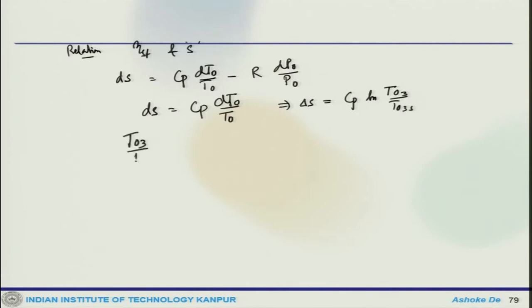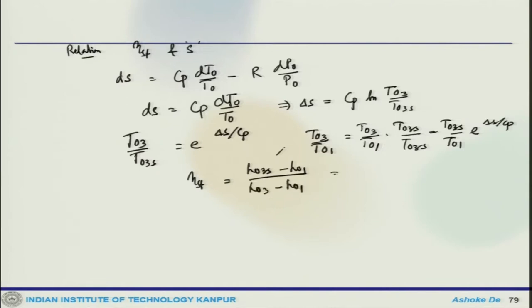Which means delta S = Cp ln(T03/T03S). One can write T03/T01 = (T03/T03S)(T03S/T01), which gives T03S/T01 = (T03/T01)e^(-ΔS/Cp). Stage efficiency η would be (H03S - H01)/(H03 - H01) = [T03/T01 · e^(-ΔS/Cp) - 1] / [T03/T01 - 1].